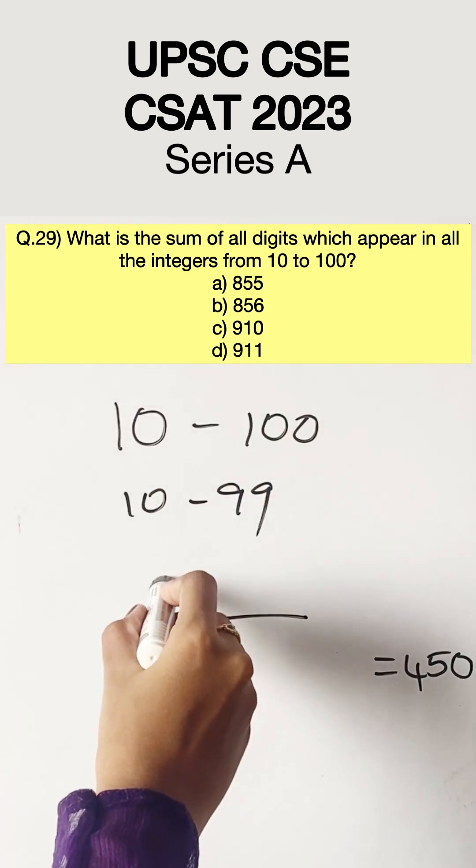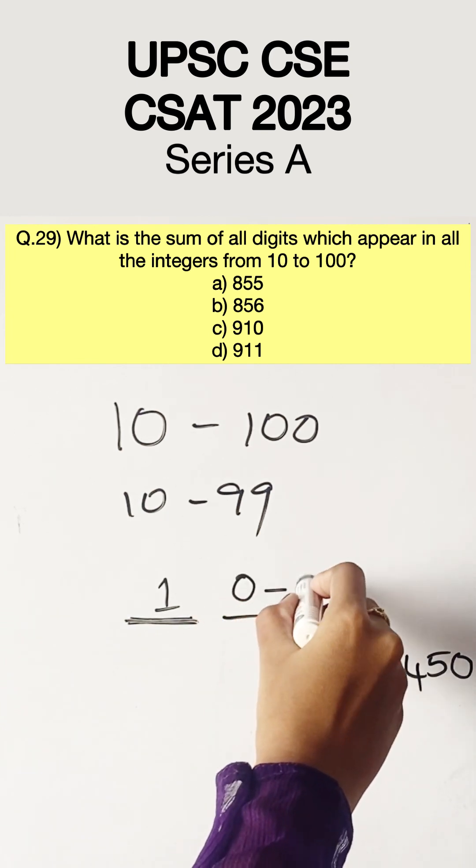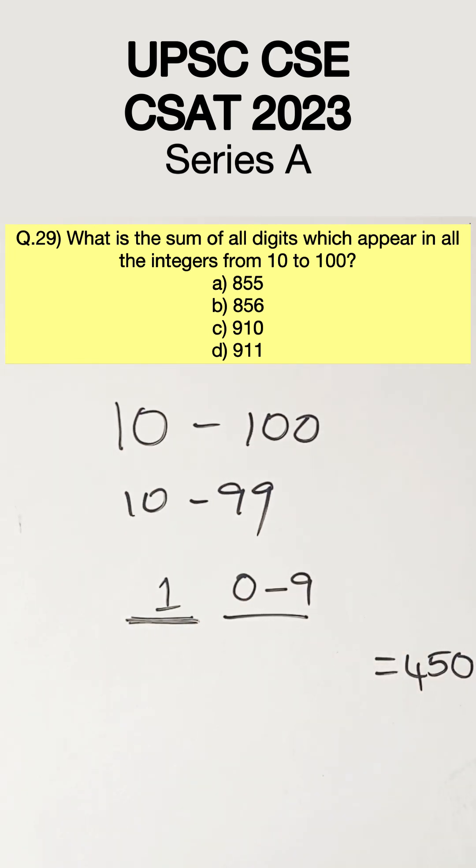Moving on to the second digit, we know that it ranges from 0 to 9. For example, from 10 to 19 it ranges from 0 to 9 and from 20 to 29 again 0 to 9. So this series would repeat itself for 9 times.